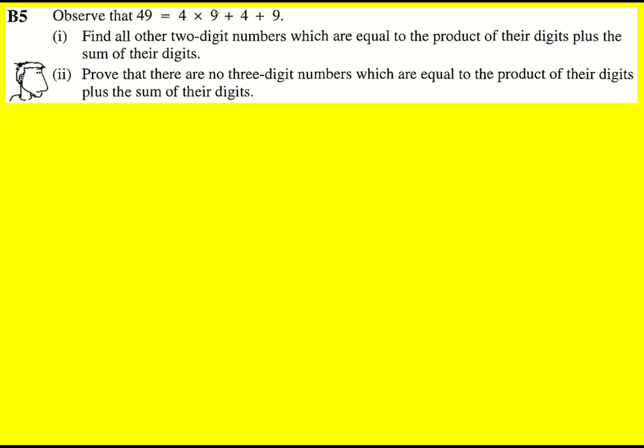49 can be written as a product of the digits plus the digits themselves, and we're asked to find all other two-digit numbers that satisfy this. So if I write my number as AB, which is in digit form, I can actually then write it alternatively as 10A plus B.